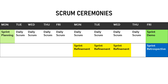The schedule goes as follows: Sprint Planning happens on the first day of the Sprint. Daily Scrum happens on a daily basis. Sprint Refinement, which we touched upon in the previous episode, happens during the second week of the Sprint. Sprint Demo and Sprint Retrospective happen on the last day of the Sprint. We will go over each of these events one by one in the upcoming slides.